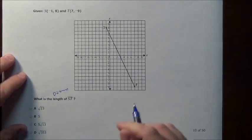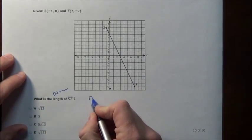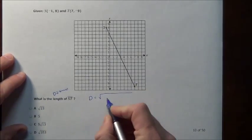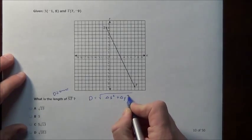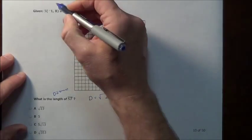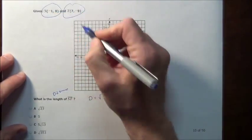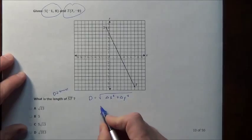Now remember the distance formula. The distance formula is basically the square root of the difference of your x's squared plus the difference of your y's squared. I don't even need this picture here. All I need is s and t. I need to subtract my x's.